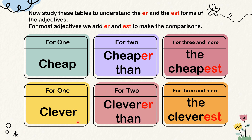Let's make another sentence with these words: clever, cleverer than, the cleverest. Lokesh is clever. Rudra is cleverer than Lokesh. Rajat is the cleverest.